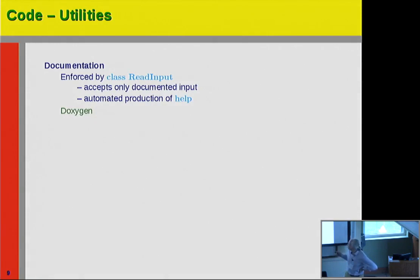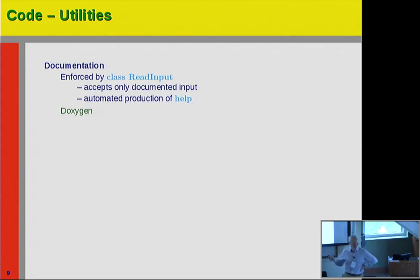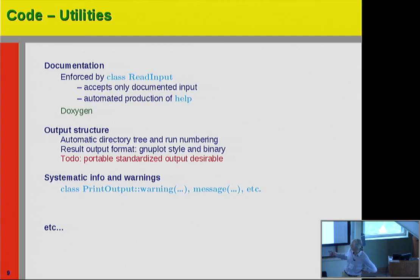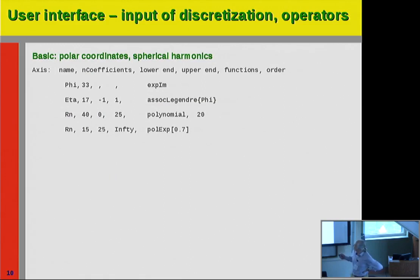We have utilities. In the sense of clarity, foolproofness, and documentation: we have funneled all inputs through one class. You can only put input into the code if you document it. You can still write something nonsensically, but barely any student is that stupid or mischievous. This is at no cost, basically, and you have it in the documentation. Similarly, output is less advanced. We have systematic warnings, messages, and classes that encourage you to monitor your code as it's going on, which is extremely important for us.